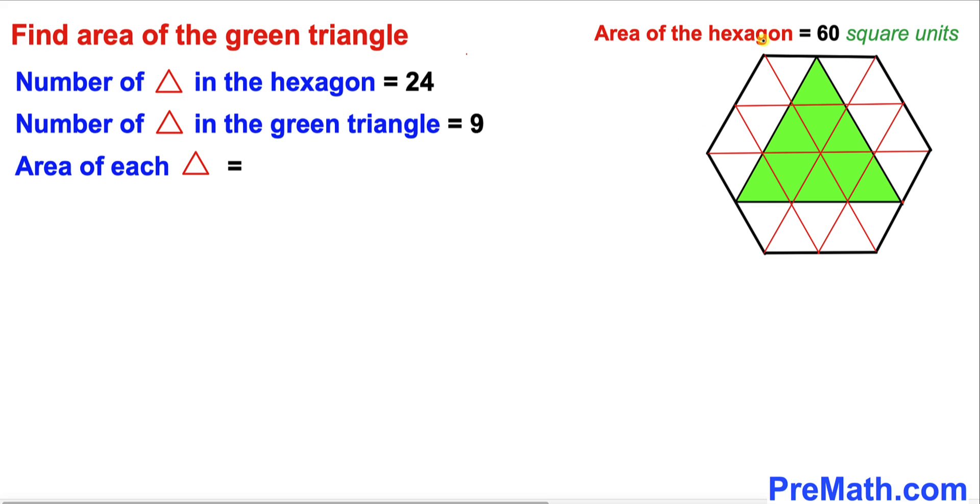Now we know that the area of this hexagon is 60 and the total number of these tiny triangles are 24. Therefore, the area of each tiny triangle is going to be 60 divided by 24, and that would be equal to 2.5.